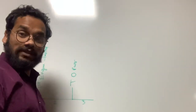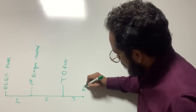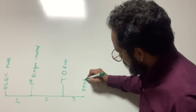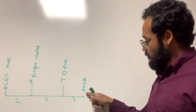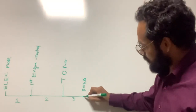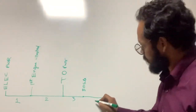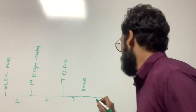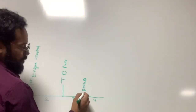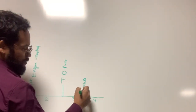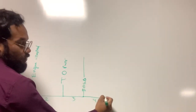Up till when does phase 3 continue? Takeoff power is applied and at 80 knots, once you cross 80 knots, then you enter into phase 4. So phase 4 starts at 80 knots.